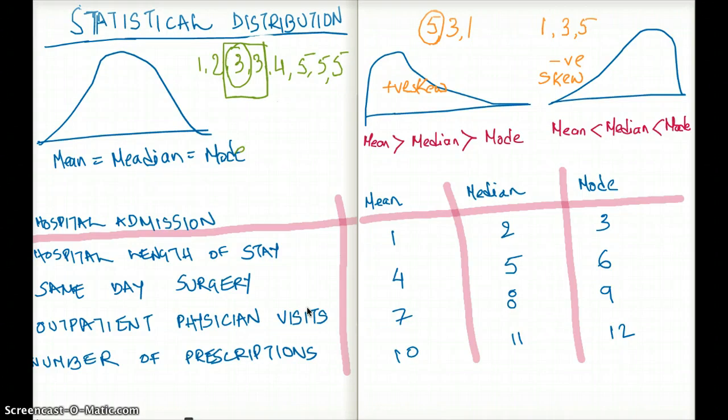So what exactly is statistical distribution? Statistical distribution is based on the bell curve that we see, the Gaussian curve, and the Gaussian curve is determined by using mean, median, and mode. When mean is equal to median, that is equal to mode, only then we get this perfectly symmetrical graph. When there is a change in mean and median and mode, we have positive or negative skew.